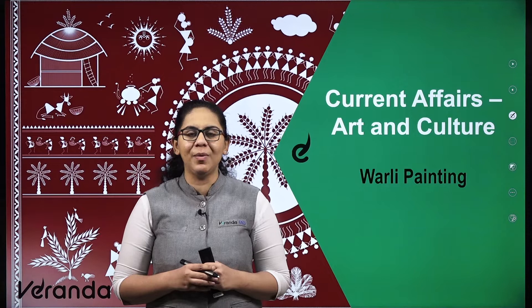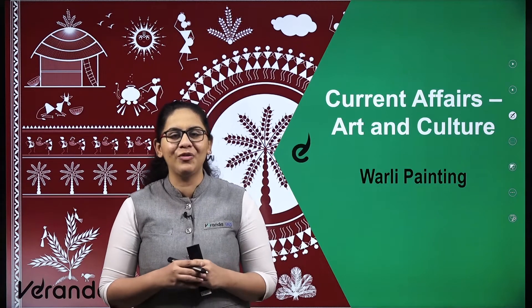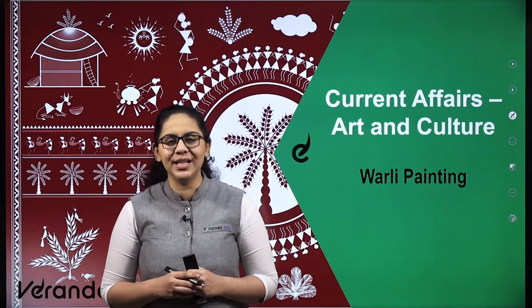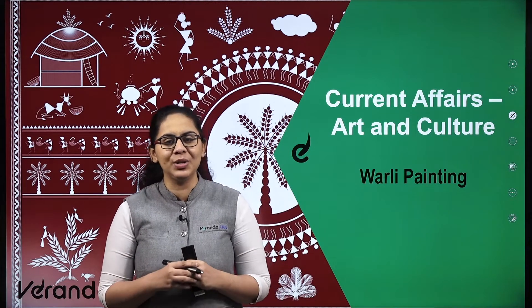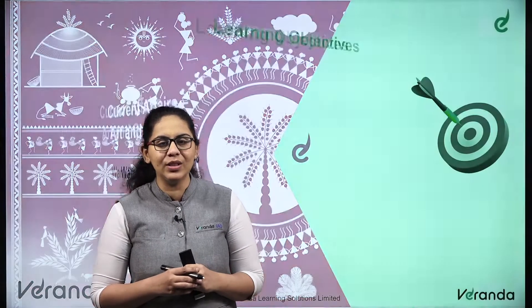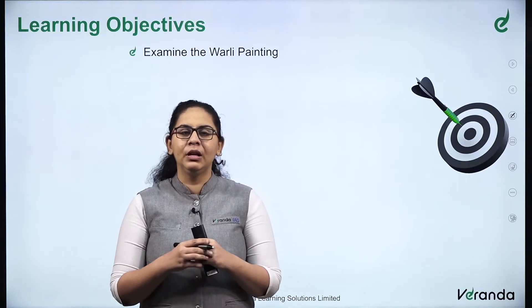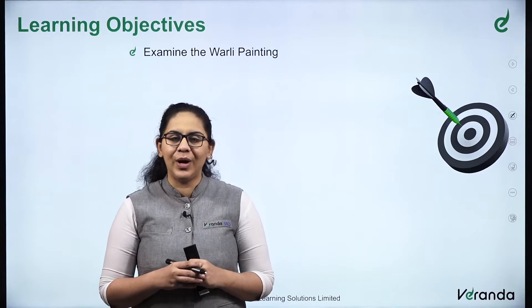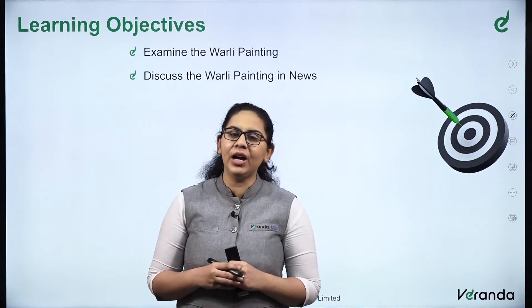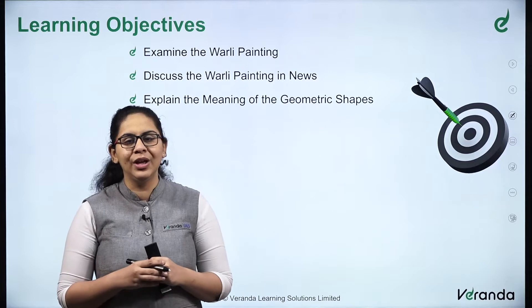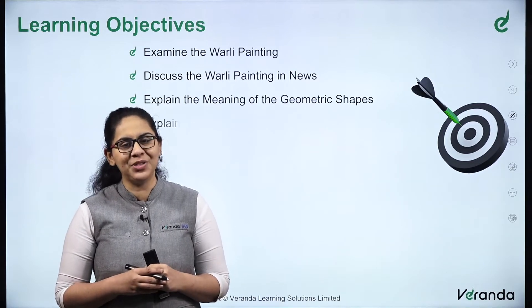Hello everyone, welcome to Veranda IAS. In this series of lectures on current affairs associated with art and culture, today we are going to study about Varli painting — one of the important paintings for your static syllabus. This painting was recently in the news. It belongs to the state of Maharashtra. The learning objectives of the day are to examine Varli painting and to discuss why it was in the news, to explain the meaning of geometric shapes.